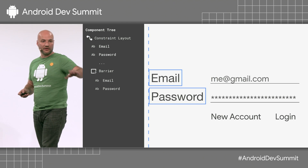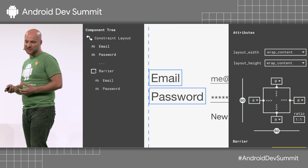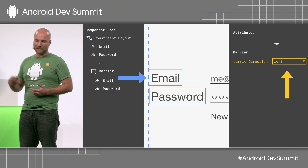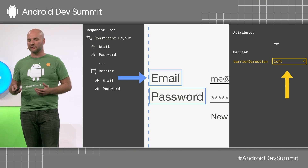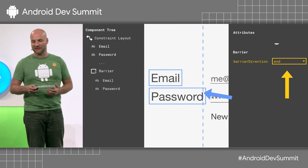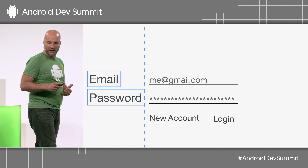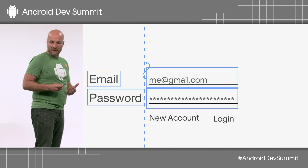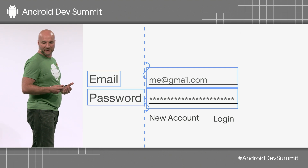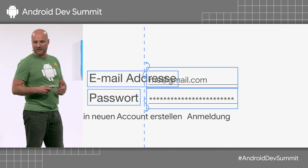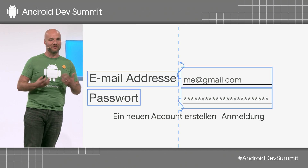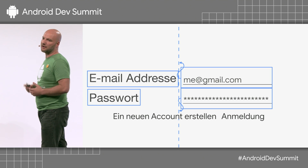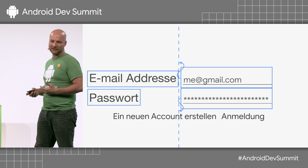By default, the barrier is on the left. If you open up the Attributes pane and scroll down to the bottom, you'll find a barrier direction, which you can set to the end. Once that's done, I'll set up my constraints and then translate my English over to German, and everything's going to re-layout and do exactly what I expected.